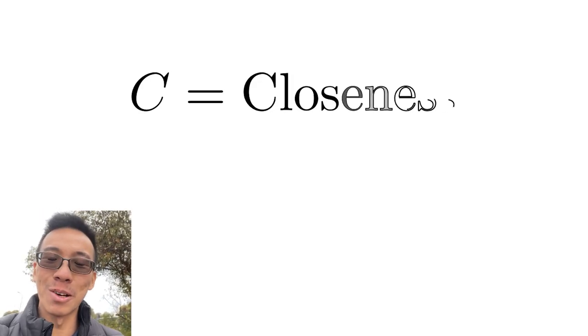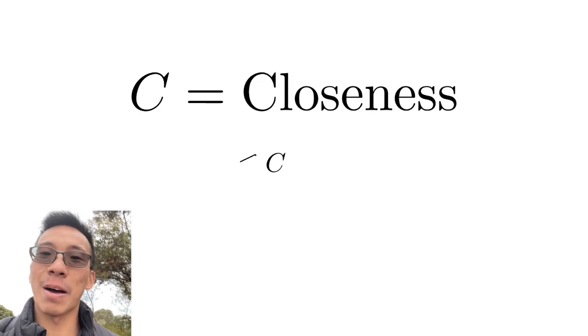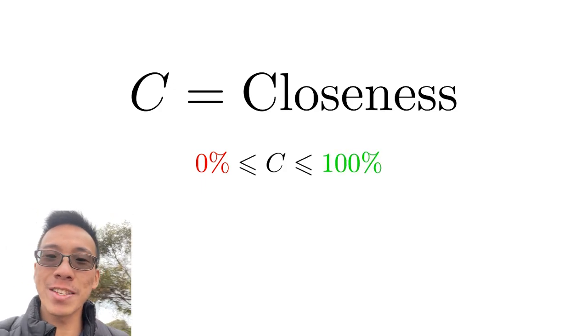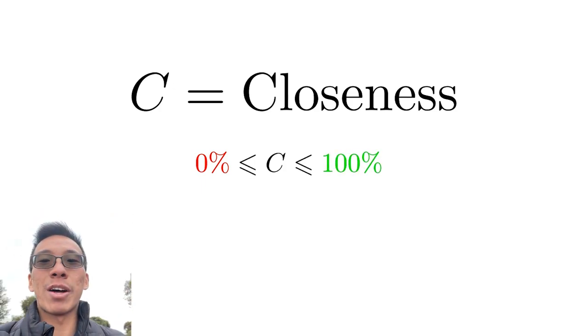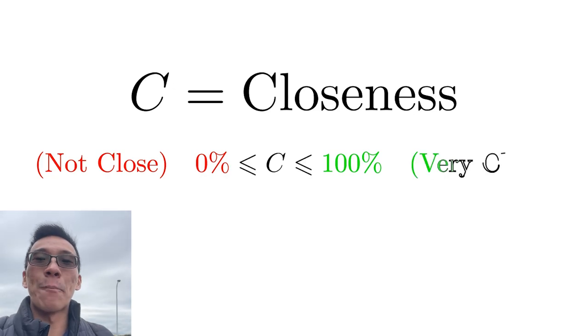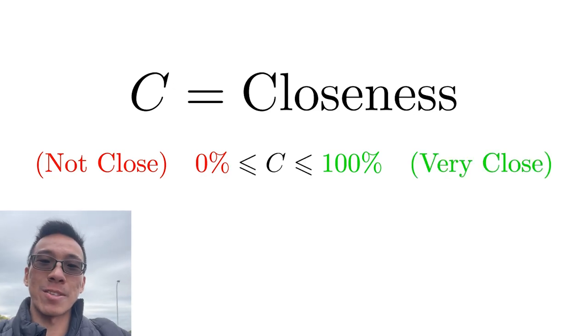The first component in this equation is C, which is an abbreviation for the term closeness. Closeness is a number between 0% and 100%. At 0% you are not as close to such a person, and at 100% you are much more close to said person.